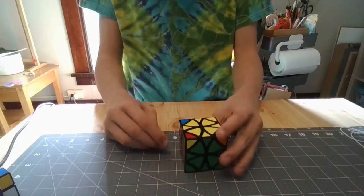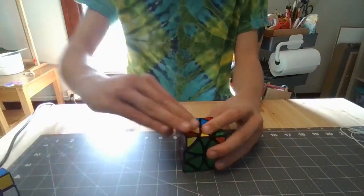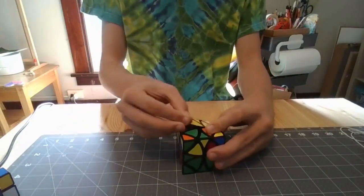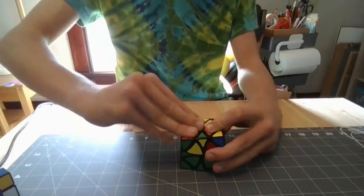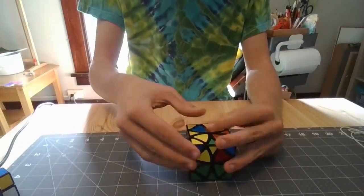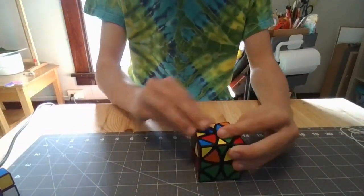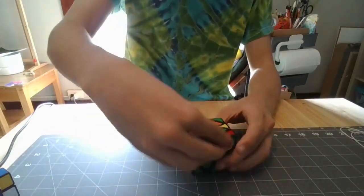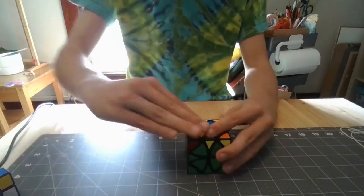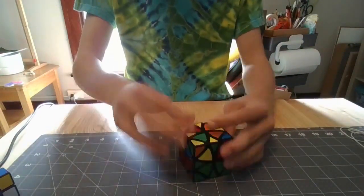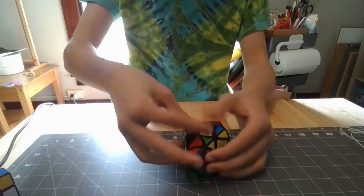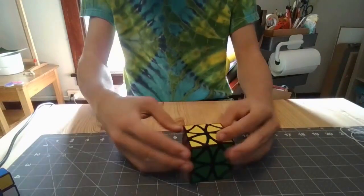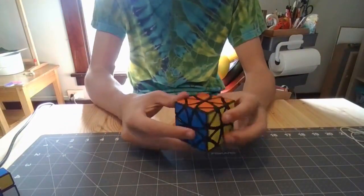And then we've got one more thing to do, which is go around the cube six times. So that was one. That was two. Here's three. Four. Five. And six. And that is it solved.